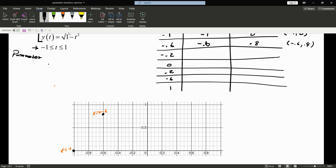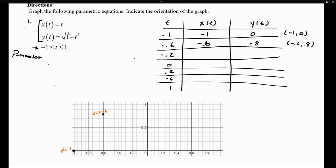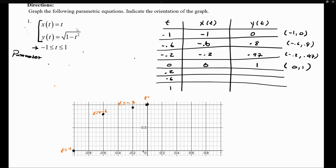When t = -0.2, plugging into x(t) gives -0.2, and plugging into y(t) gives 0.97. So we have coordinate point (-0.2, 0.97). We plot that point and indicate t = -0.2. When t = 0, x = 0 and y = 1, giving coordinate point (0, 1). We plot that and note t = 0.